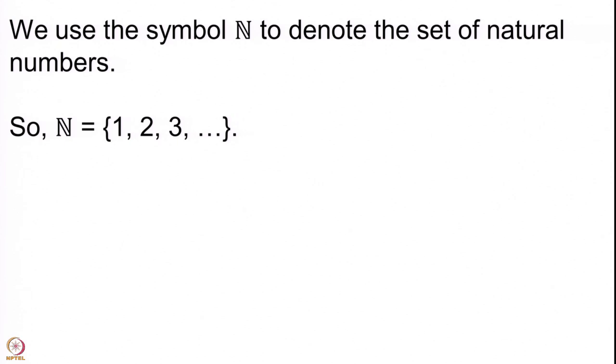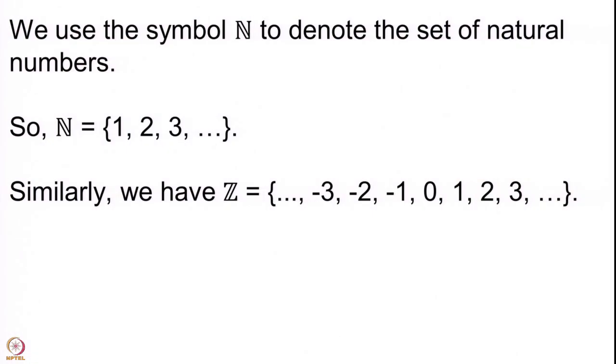Now you may wonder what has happened to the number 0 and also the negative numbers. There is indeed a set consisting of all natural numbers, their negatives, and also 0. Since we have fixed a notation for the set of natural numbers, we use another symbol — traditionally capital Z, again with a slight decoration. Z stands for the German word 'zahlen', spelled z-a-h-l-e-n, meaning whole or complete numbers.